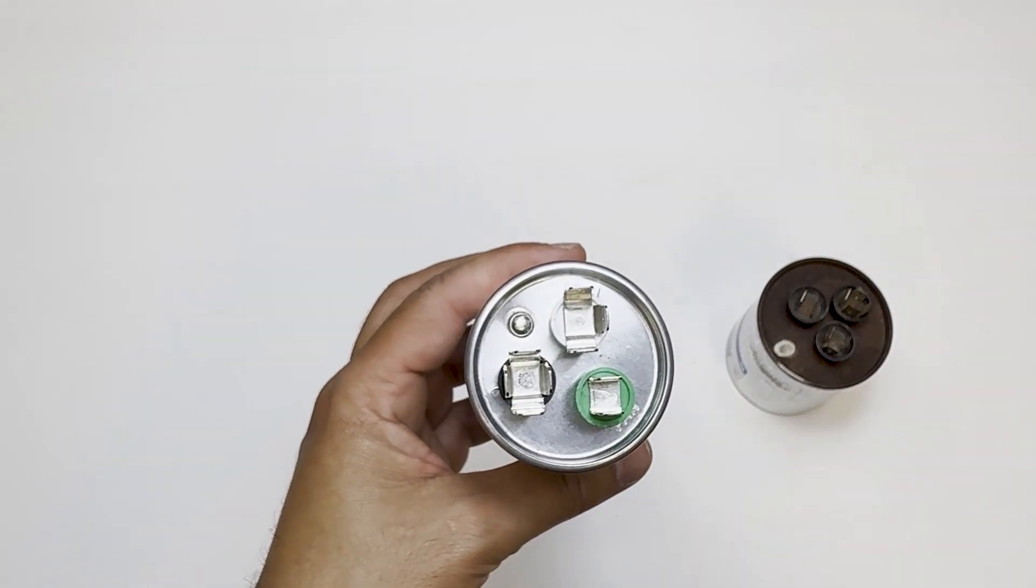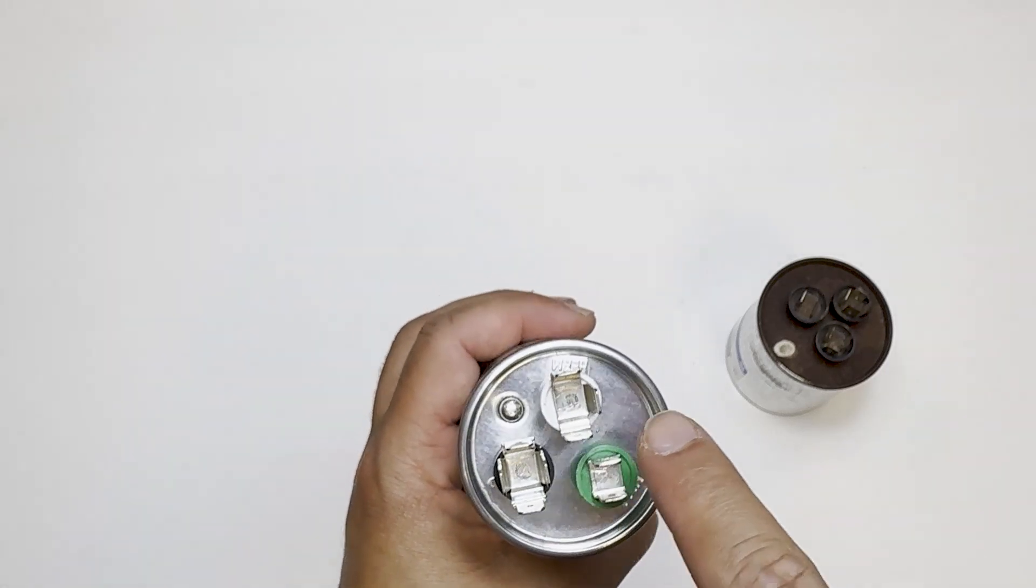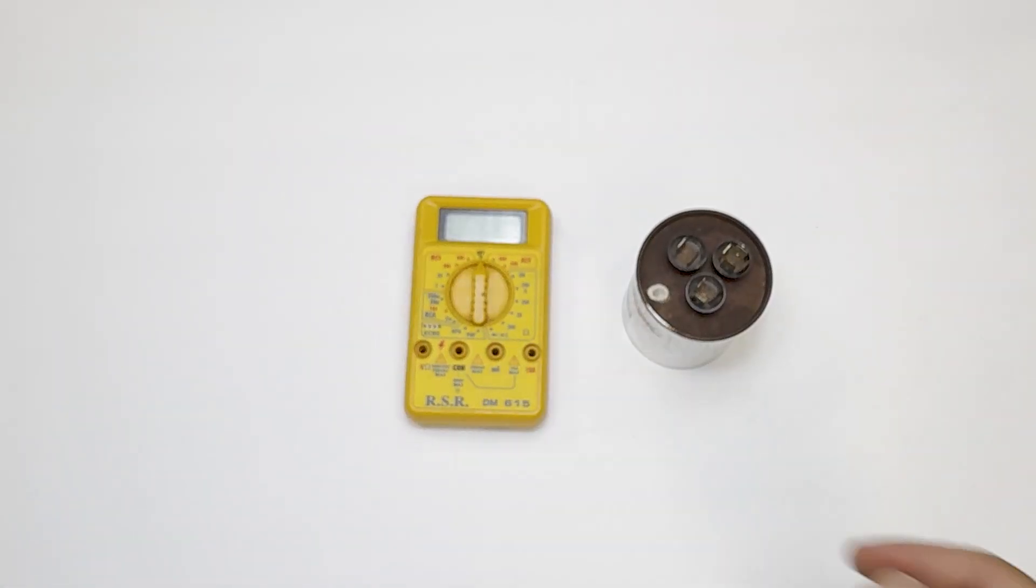But before we toss the old one, let's test it with a basic multimeter, the kind that doesn't have a special setting for capacitors. Right off the bat, you can tell it's bad because it's domed and bubbled up, but we're going to test it anyway, just to confirm.